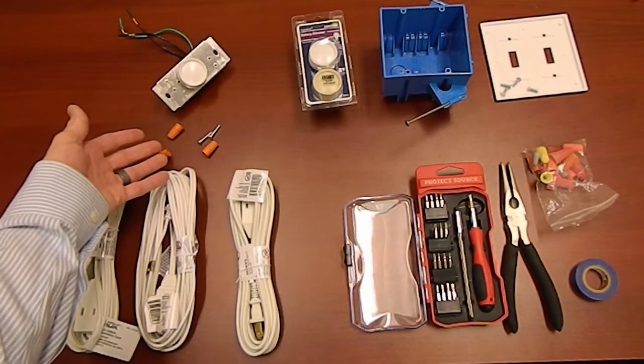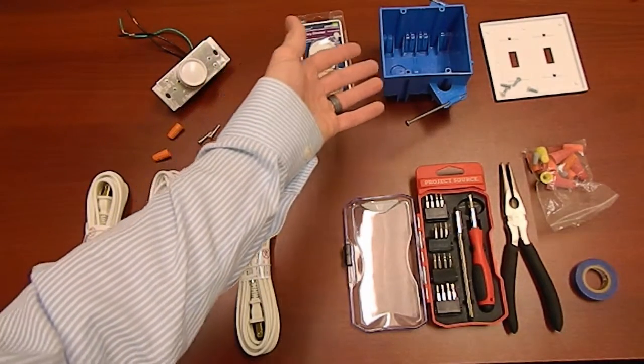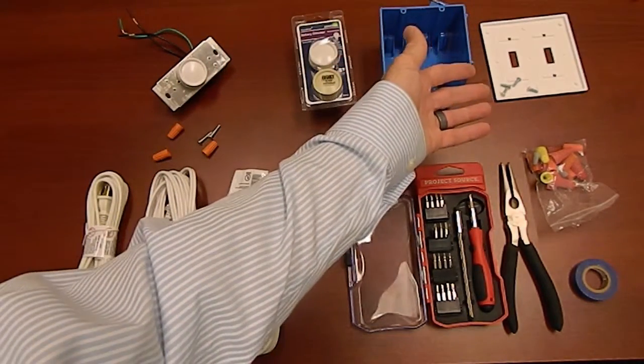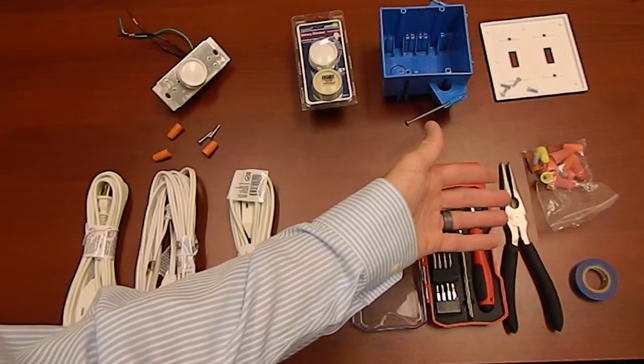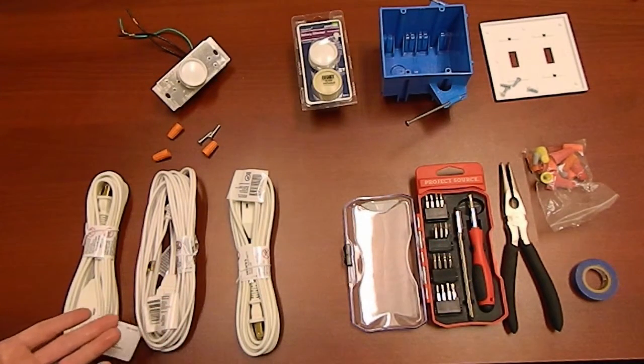Here I've got the tools that I'm going to need. I've got my dimmers that came with the wire nuts. I've got my two gang box and cover plate. I've got some of the tools that I'm going to need and of course I've got my extension cords that I'm going to cannibalize for this project.